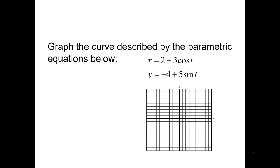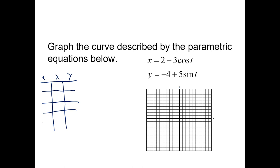We moved on to chapter 10, covering parametric equations. You need to be able to graph parametric equations by making a table and by eliminating the parameter. To make a table, you're plotting in the xy-plane, getting xy points by using reasonable values of t. From trigonometry, use the quadrant angles: 0, π/2, π, 3π/2, and 2π.